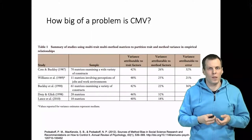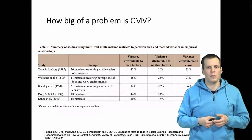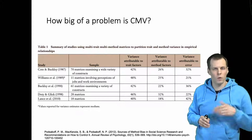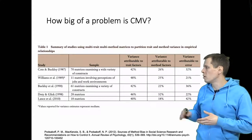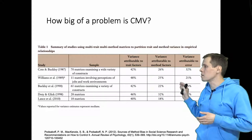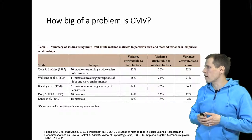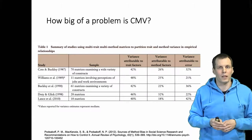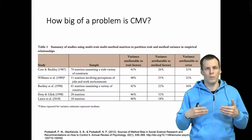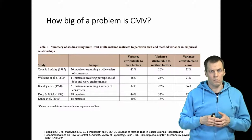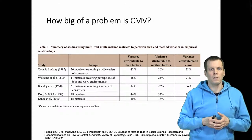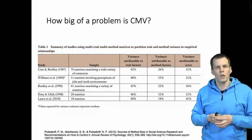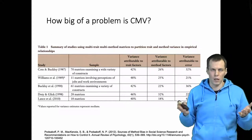How big of a problem is common method variance? There is actually disagreement on this. Podsakoff's highly cited 2012 paper states that it is a big problem, citing estimated percentages such as Cote and Buckley's finding that 42 percent of indicator variance is attributable to constructs and 26 percent to method — implying that method variance is almost more than half of the actual trait variance. That would be a big problem. But these studies have also been questioned, and whether they used realistic models to do the variance decompositions we can always ask.